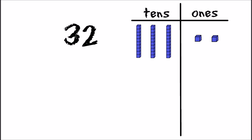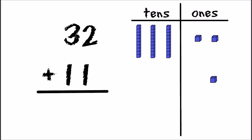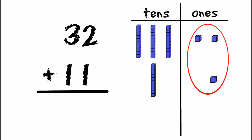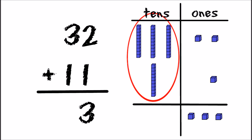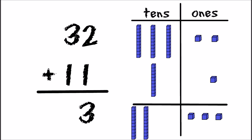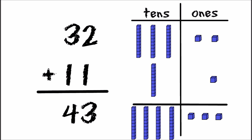Now let's try adding something to our thirty-two: eleven. Eleven is the same as one one-unit block and one ten-unit block stack. We're going to start by counting all of our ones, because we always start with the ones column. We have one, two, three ones blocks. So we put a three in the ones column. Next we count our tens: one, two, three, four. We have four tens, so we put a four in the tens column.